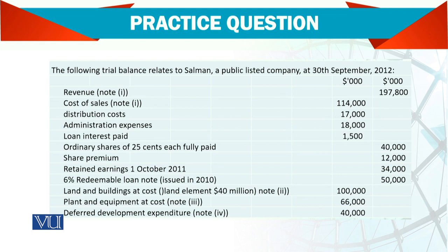Honorary shares of 25 cents each, fully paid. This is a 25 cents, 10 rupees share with share premium and retained earnings as opening balances. There is a 6% redeemable loan issued in 2010. The loan is 50 million at 6% interest, so that is 3 million total — meaning you need to create 1.5 million interest payable.